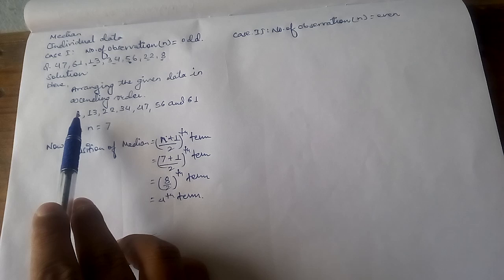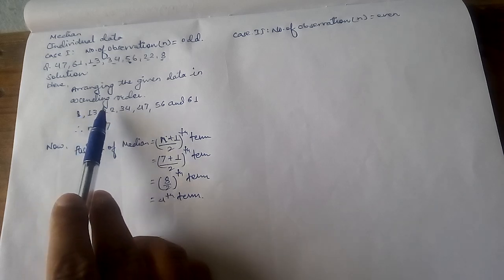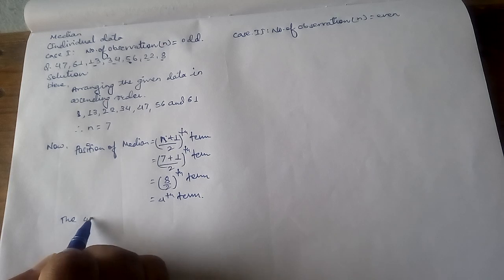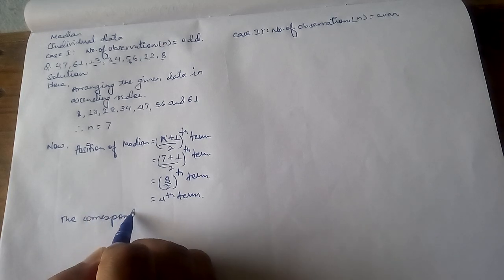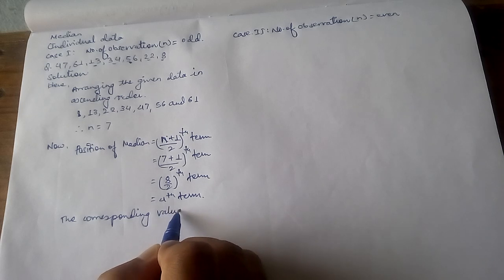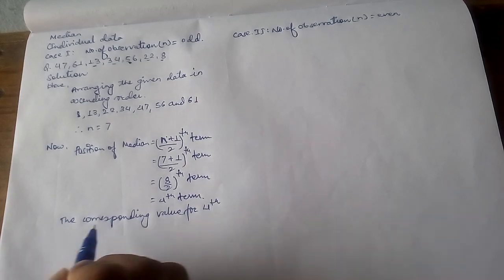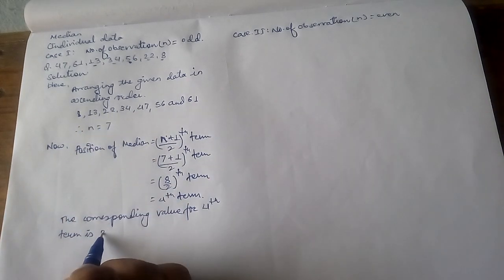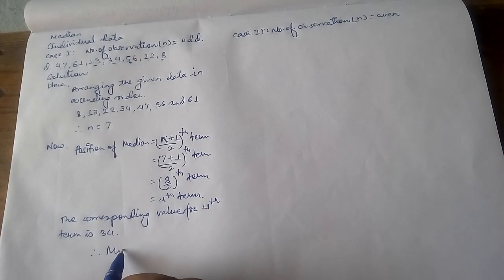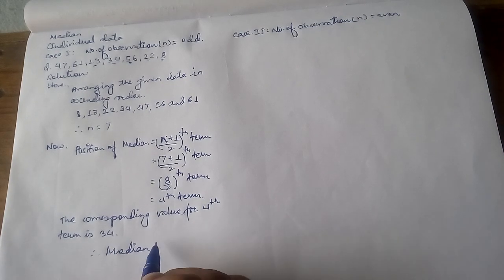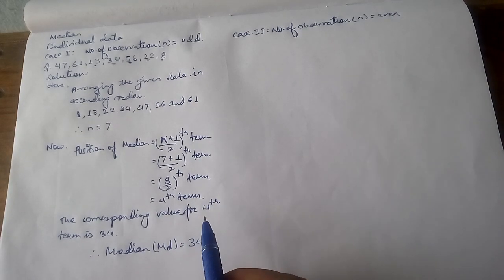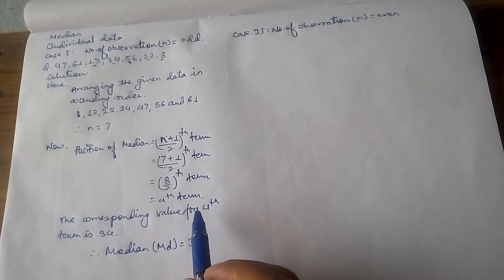The position of the median is the 4th term. Counting in the ascending order arrangement — 1, 2, 3, 4 — the 4th term corresponds to 34. Therefore, the median Md = 34. In this way we can find the median of individual data when the number of observations is odd.